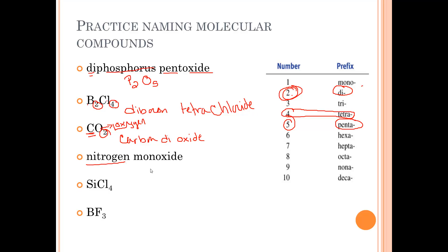Nitrogen. They don't write mononitrogen. It's just assumed that if there's no prefix, it's a one. Monoxide. There's one oxygen.